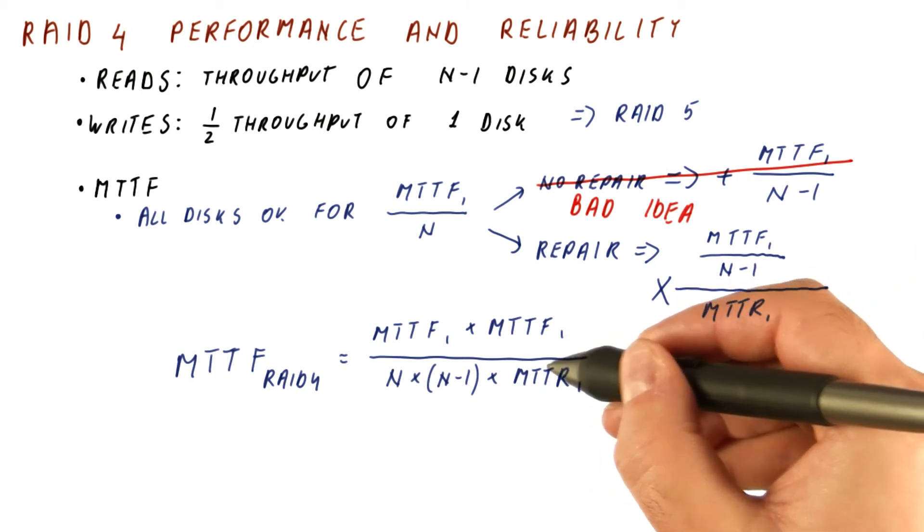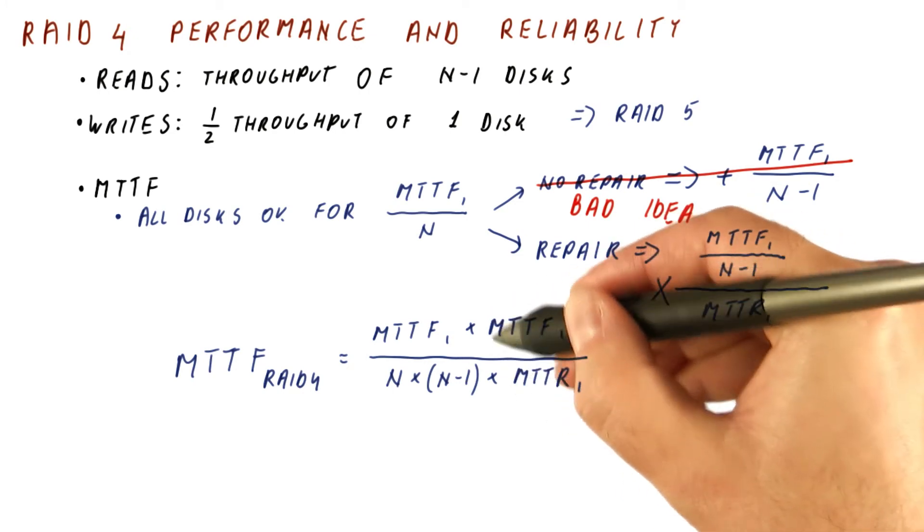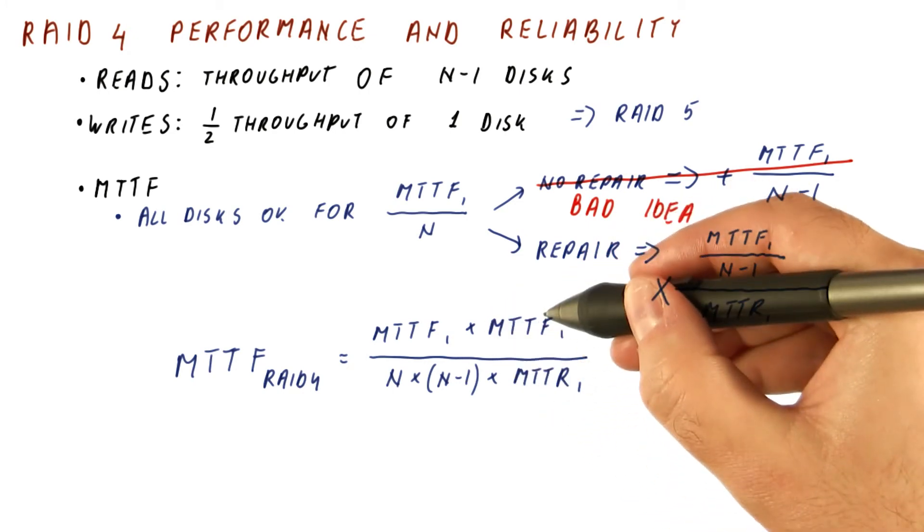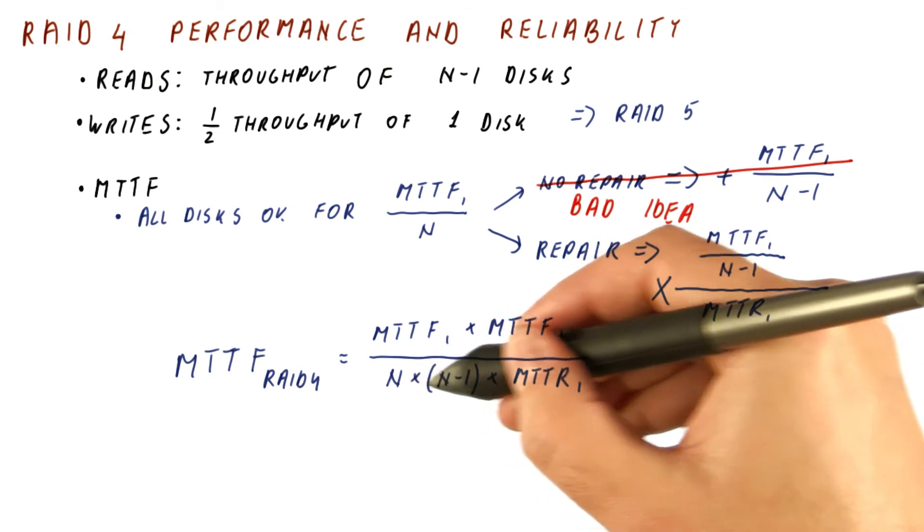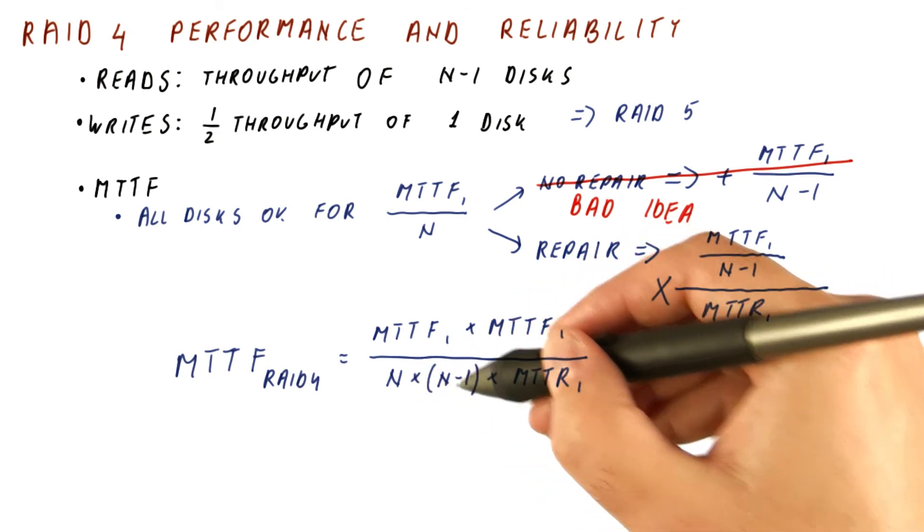So note that this is very small compared to this. So this particular ratio is extremely large. The number of disks is, let's say, 4. You don't want to have too many disks in a RAID4 array.